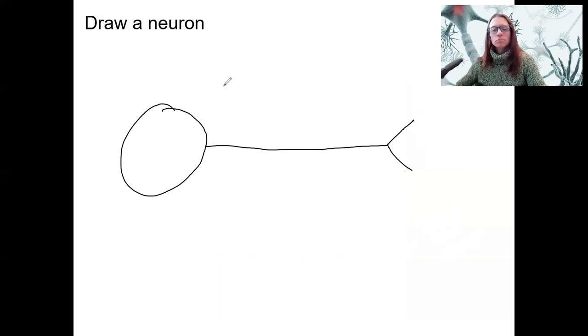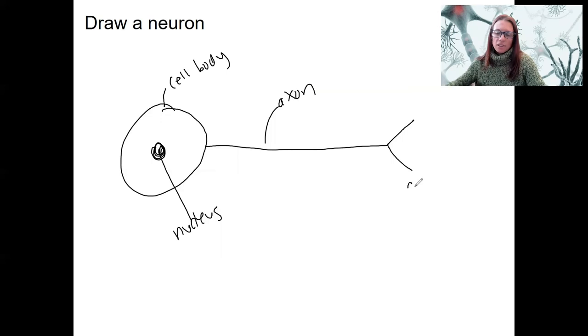I'm going to draw one for you now. That's my neuron. Cell body. Have a nucleus in there? That's fine. This is the axon, and these are the axon terminals. That is a basic neuron.